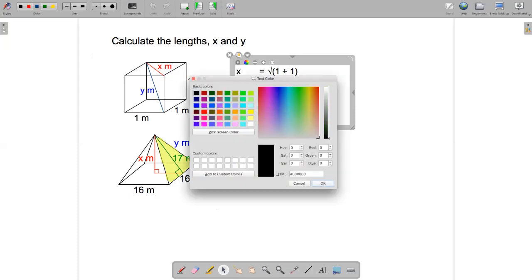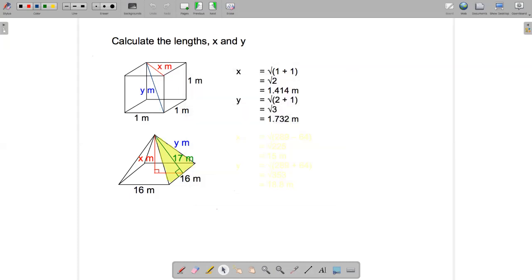And that seems reasonable as well. Just looking at the diagram, seems reasonable that if this is 1 and this is 1.414, that from here to here would be more than 1.414 and 1.732 seems reasonable.